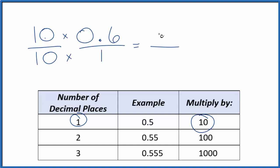10 times 0.6, that's 6. 10 times 1 is 10, and we have our fraction here. We could reduce this further. We could divide 2 into 6, that would give us 3. 2 into 10, that gives us 5. So 0.6 is equal to 3 fifths. So we've converted the decimal to a fraction. If you divide 3 by 5 you'll get 0.6.